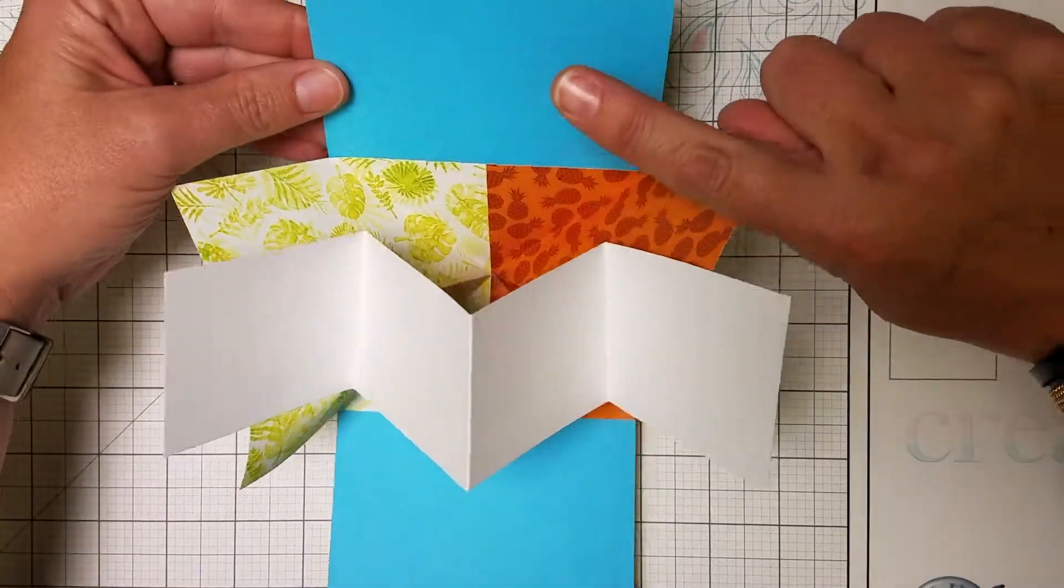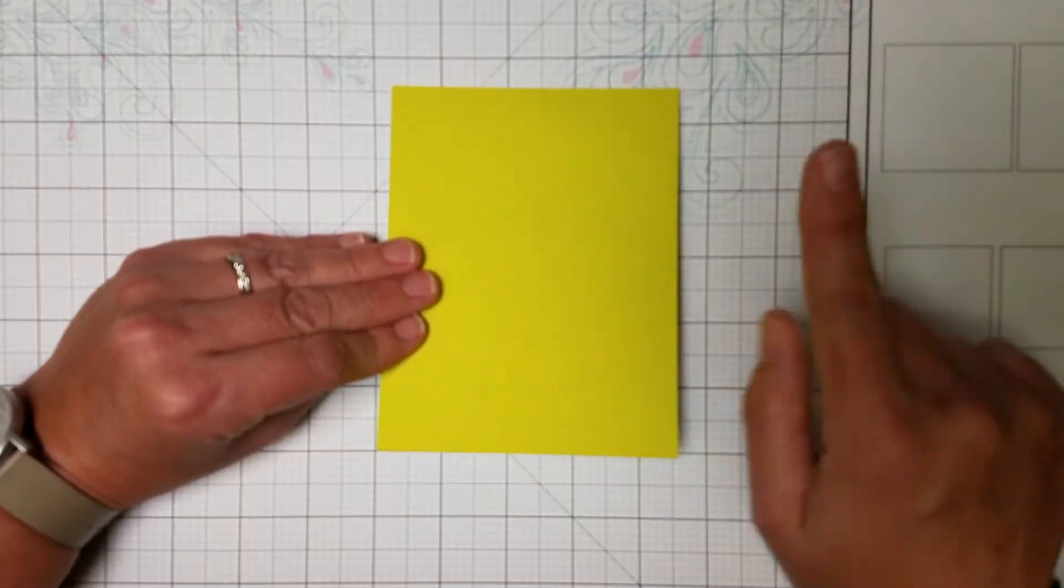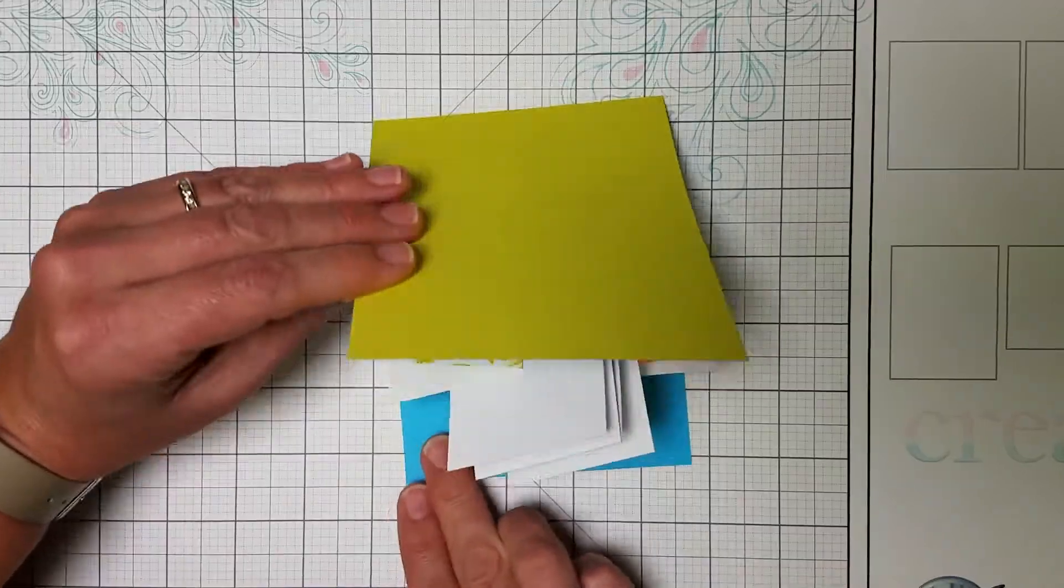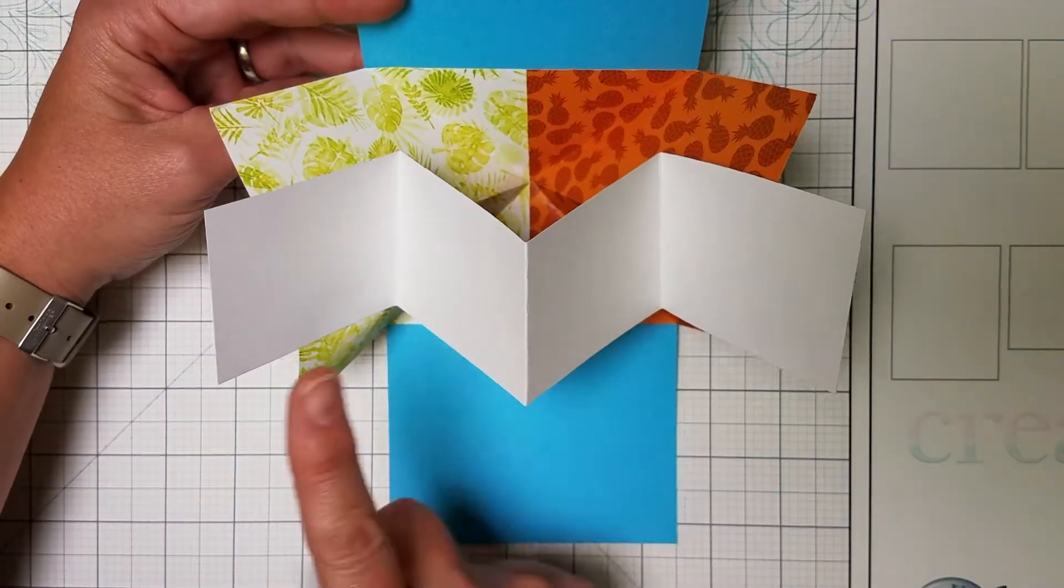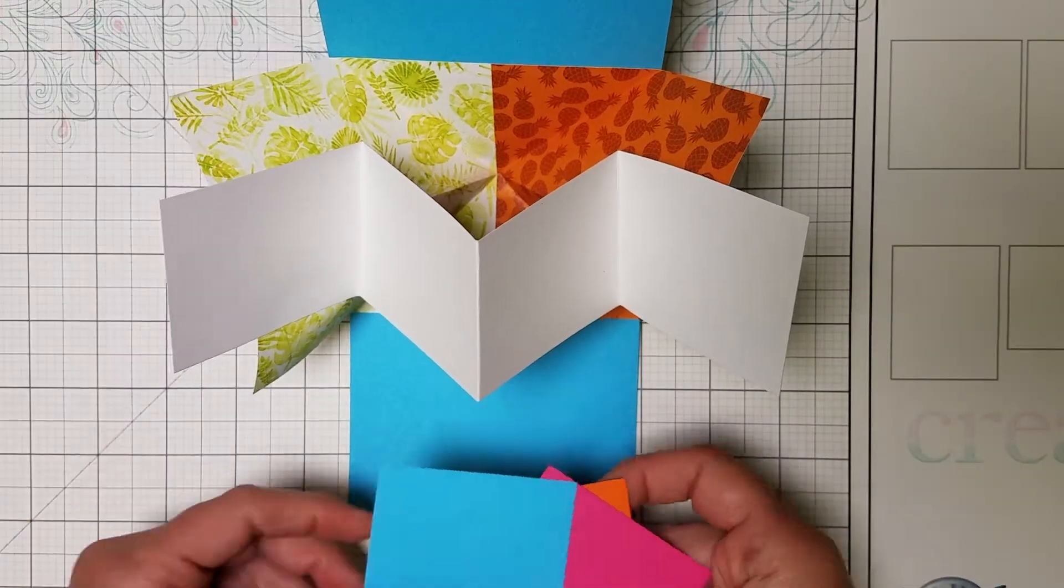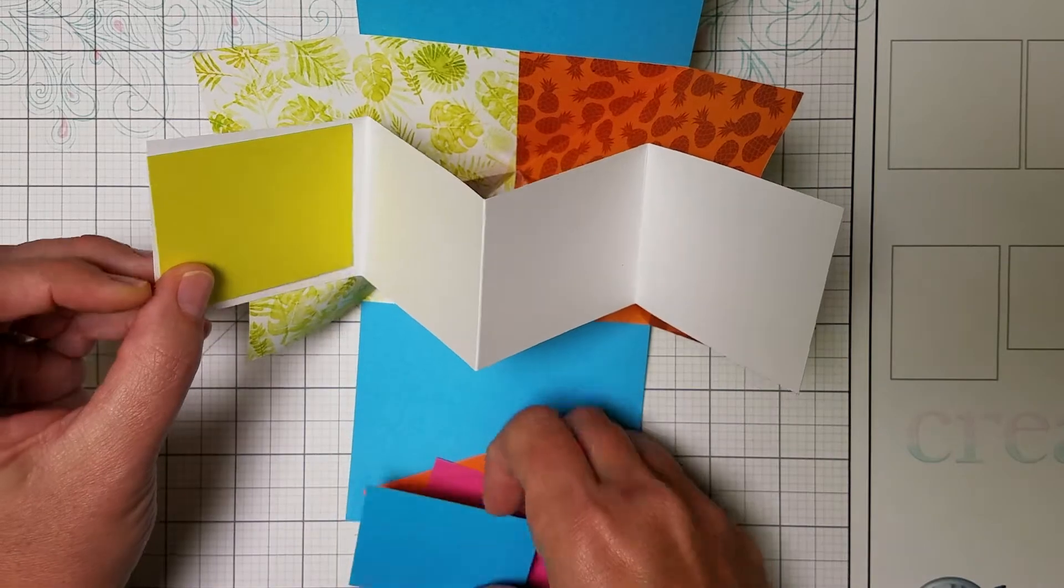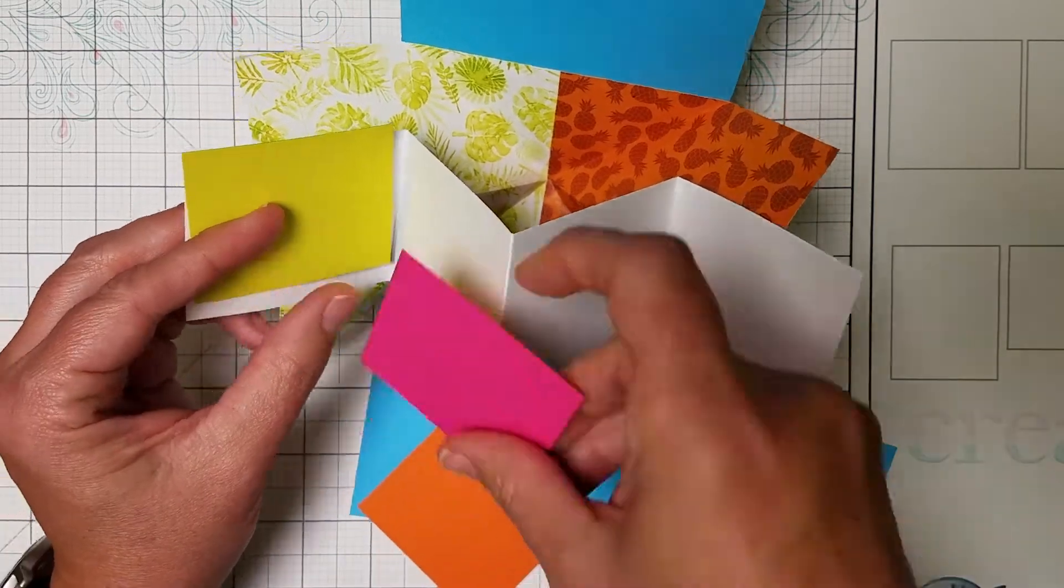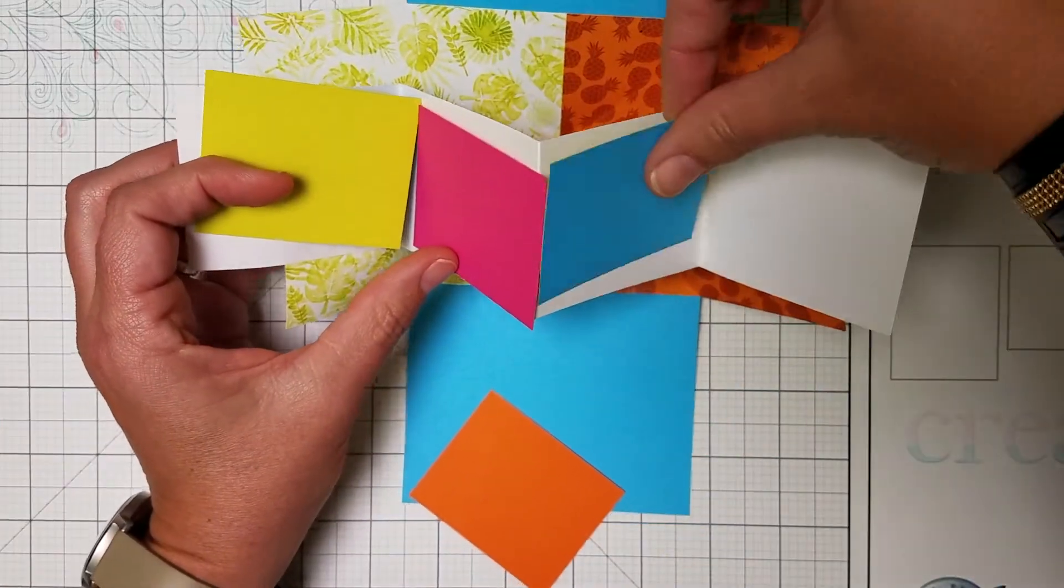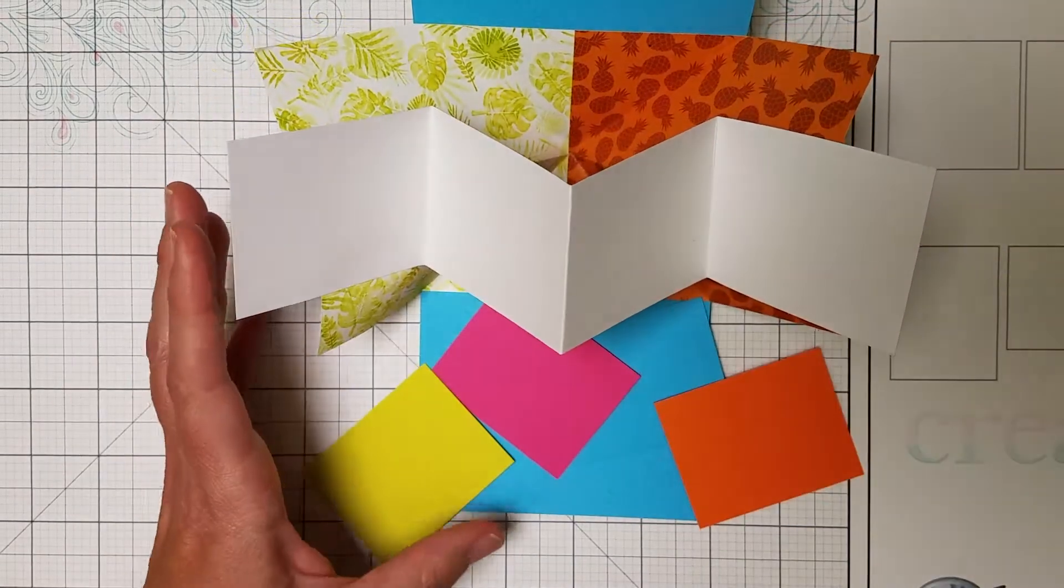And then the way I created the cutting diagram for this and the instructions is from one sheet of paper, you'll get your card base, you'll get this pop-up mechanism, and also the four mats that you need. So what you can do at this point is stamp and decorate the little mat, and you can alternate colors if you want, and then all four of these pieces will nest perfectly onto my pop-up.